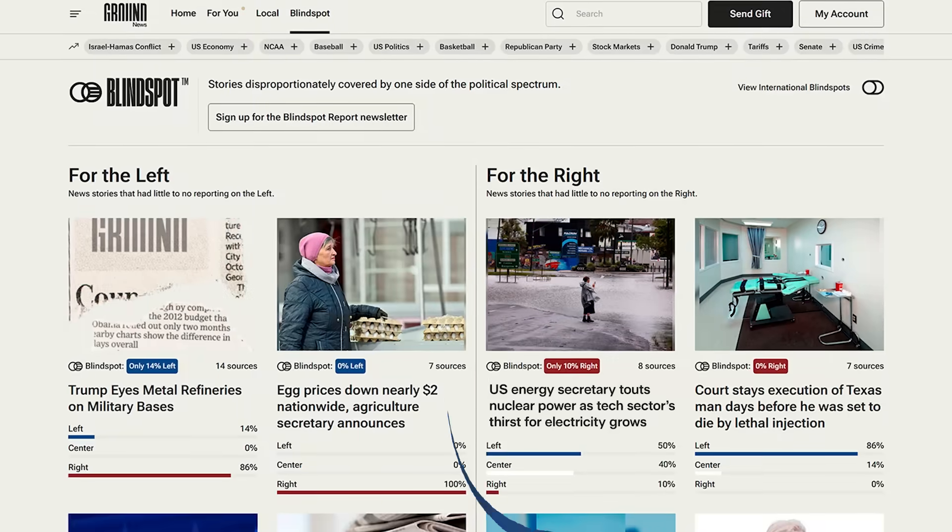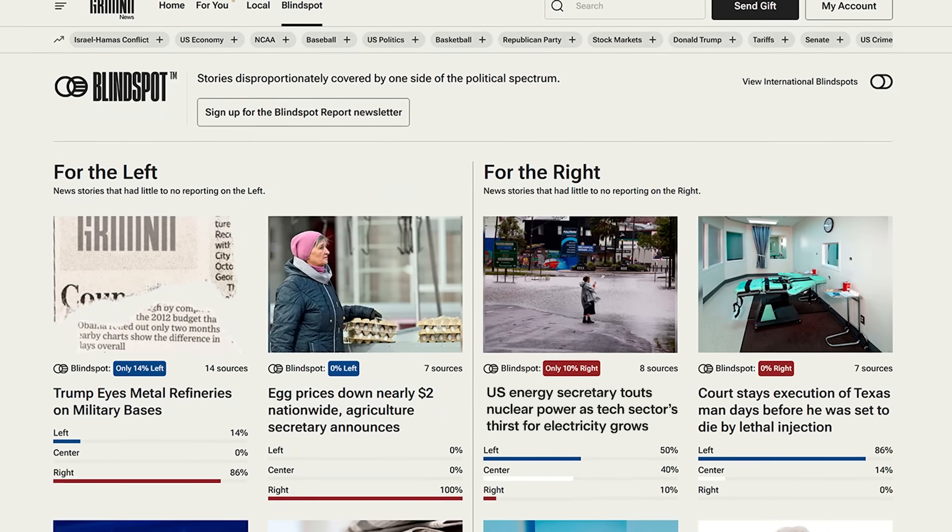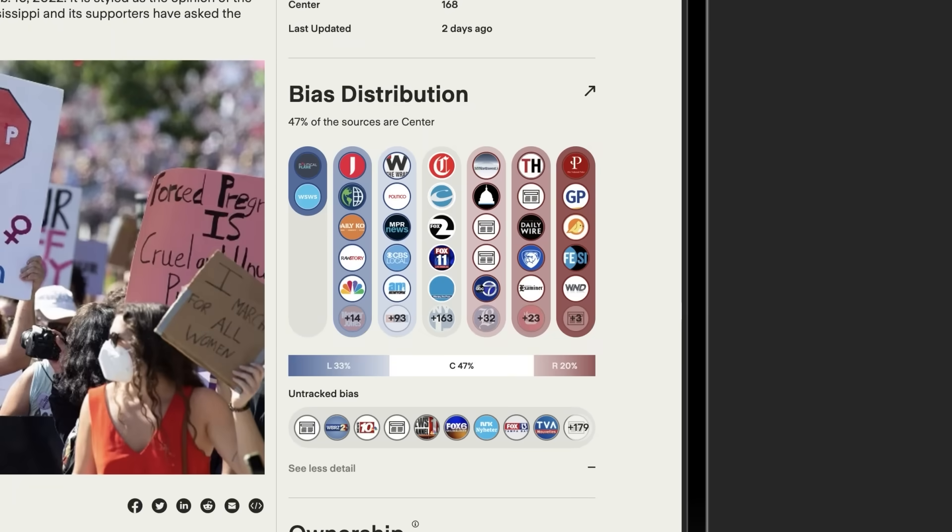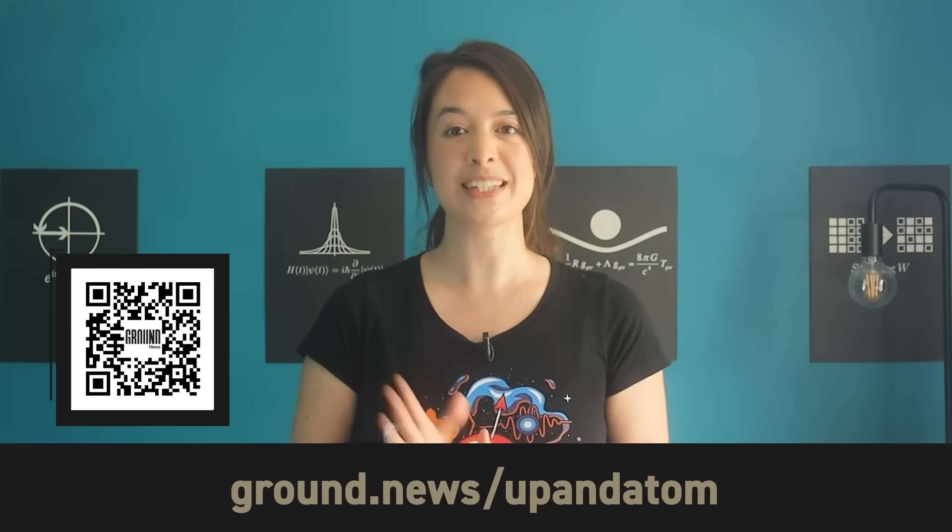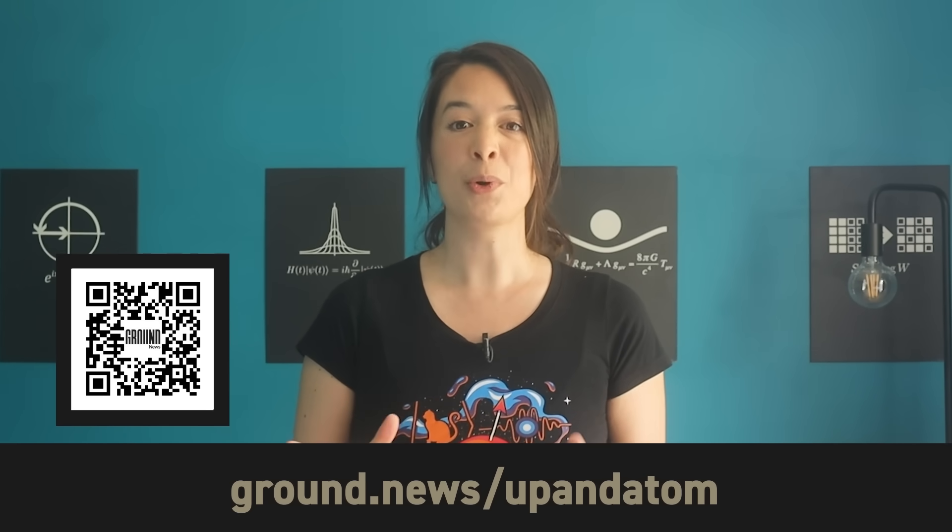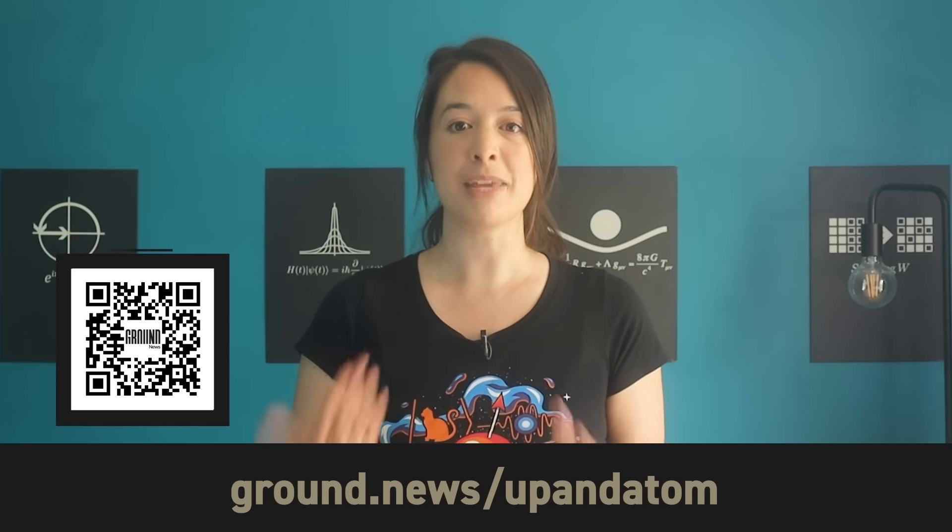For example, if you lean right, you probably missed this story about the US Energy Secretary emphasizing the need for reliable energy to support the growth of artificial intelligence. As a fellow critical thinker, you know that we can't just rely on one piece of data or a single perspective to get the full picture. For example, Ground News allows you to analyze news in a scientific way by comparing sources, checking for bias, and building a well-rounded understanding of the most important things going on in the world today. Ground News are offering you 40% of their Vantage subscription, which is the subscription I'm on. You get unlimited access to all of their amazing features. Access this discount through the link ground.news/upandadam, which you can also find in the description of this video, or scan the QR code on screen. Support an independent news platform working to make the media landscape more transparent.